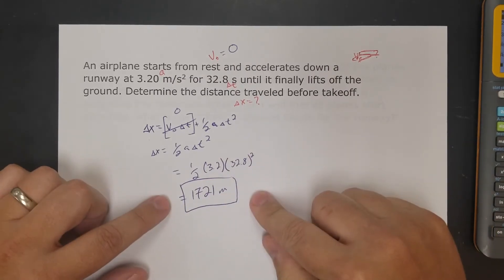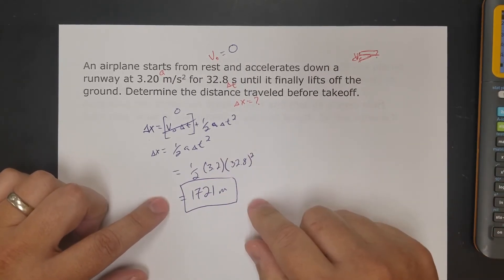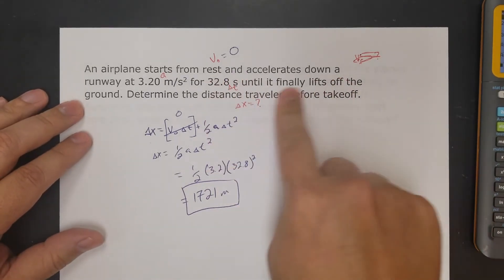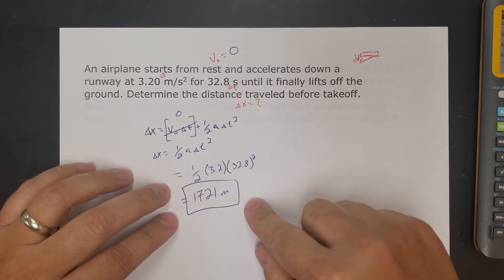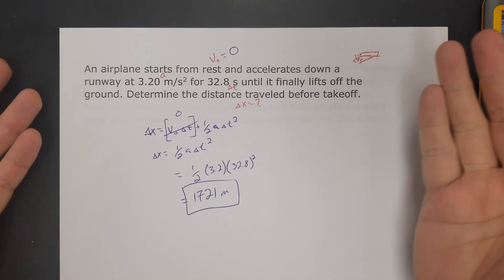Again, before you write it down and say that's my answer, does this make sense? Airplane going down the runway, accelerating for 30 seconds, about a mile. A little over a mile - 1,600 meters is a mile, that's 1,700 meters. Yes, that makes sense.